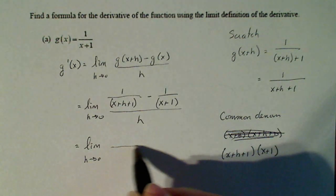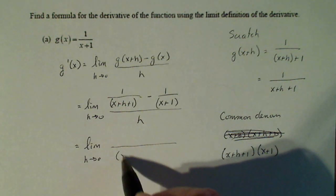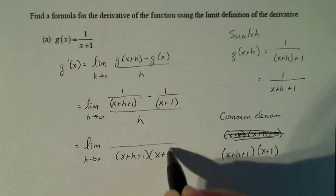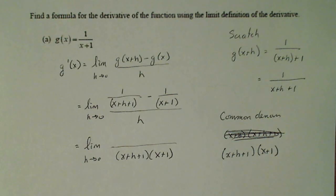So that's the guy that's going to end up on the denominator down here: (x+h+1)(x+1). Don't multiply it out. Here's a good rule of thumb.